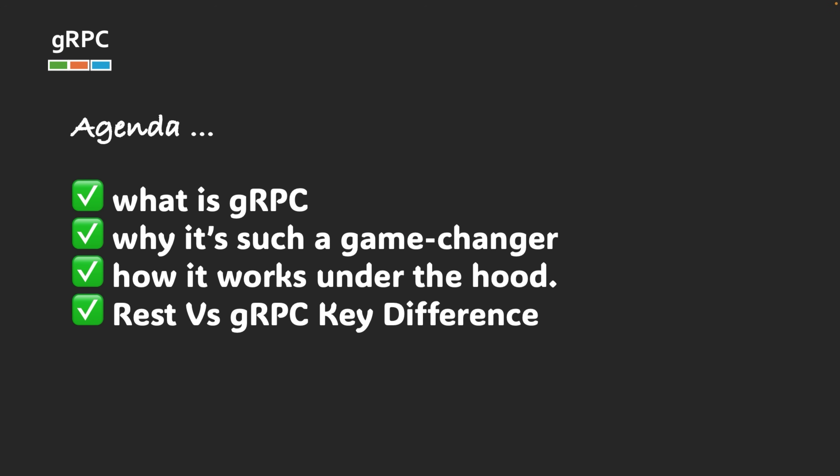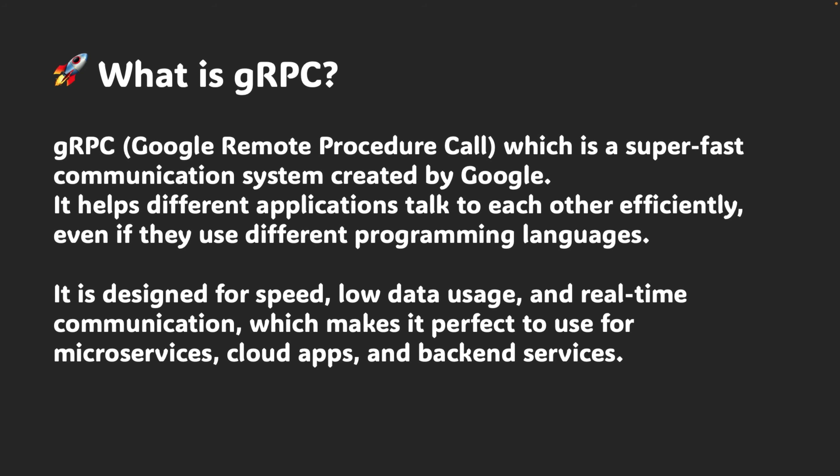gRPC stands for Google Remote Procedure Call, which is a super fast communication system created by Google itself. It helps different applications talk to each other efficiently, even if they use different programming languages. It is designed for speed, low data usage, and real-time communication, which makes it perfect for microservices, cloud apps, and different backend services.